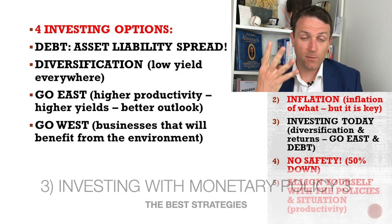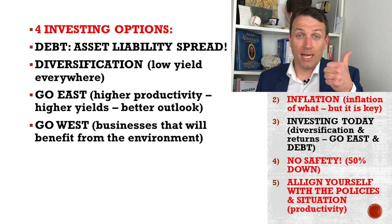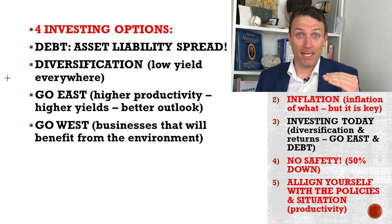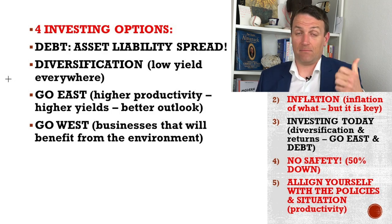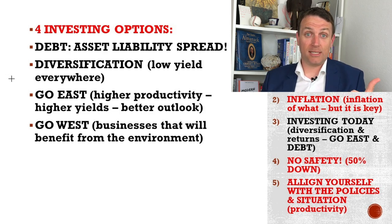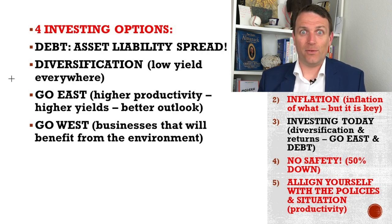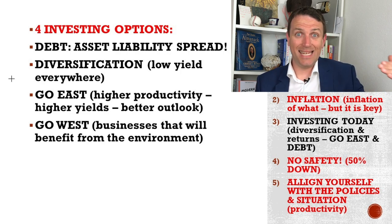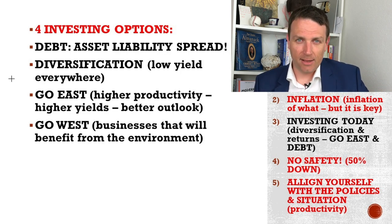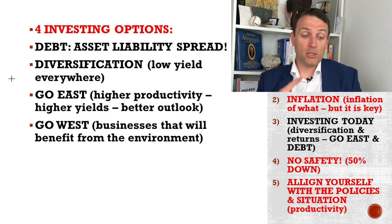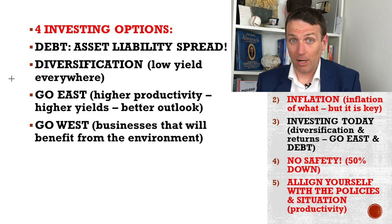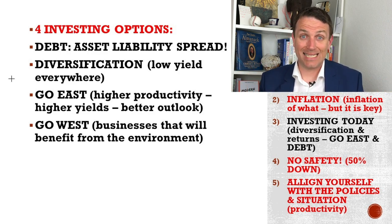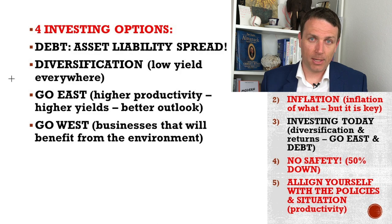Bridgewater shares four very interesting investment options. We have debt — the spread between asset returns and liabilities. If you can bank on debt, that is great, because if cash is trash, then borrowing money means you will need to return less real value in the future. The key is also diversification, following the policies, and focusing both East and West to see which assets will benefit from current policies.